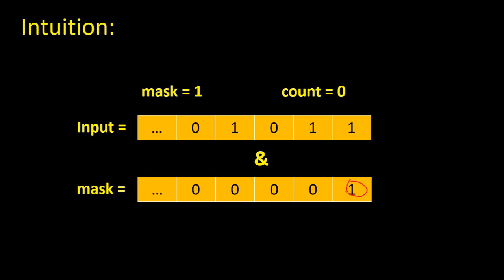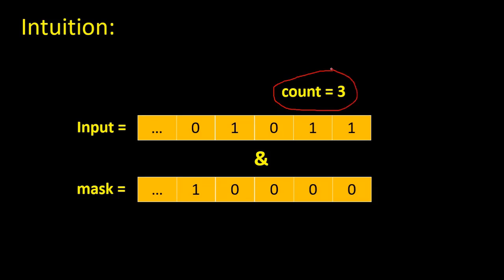Then we shift the mask one bit to the left and do the bitwise AND operation again. Here we have one and one, so the result is not equal to zero — increase count by one. Then shift again. In this case the result equals zero, so we don't increase count. Shift again — the result is not zero, so increase count by one. We're left with count equals three, and we return three.